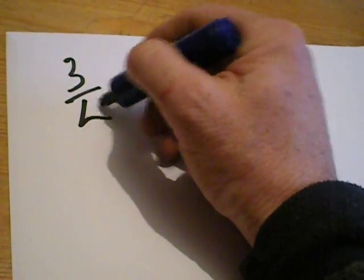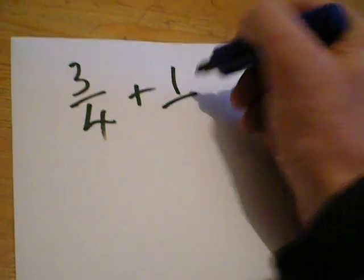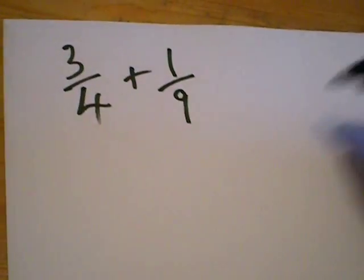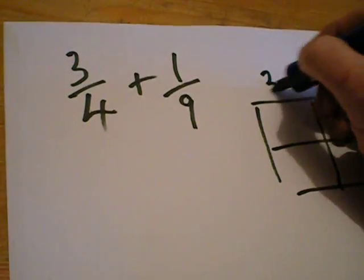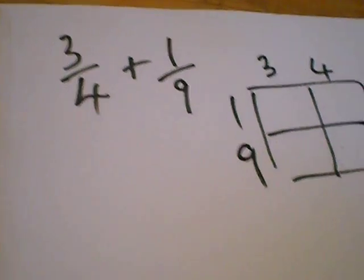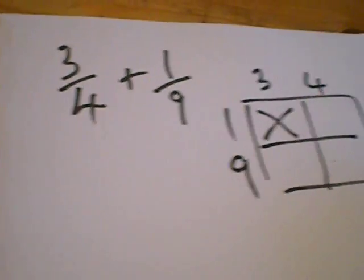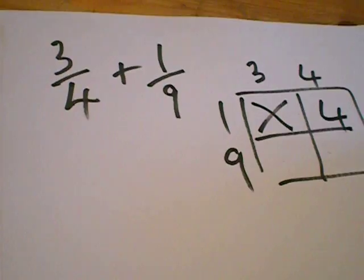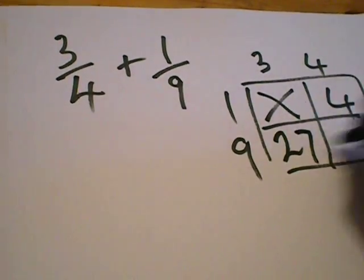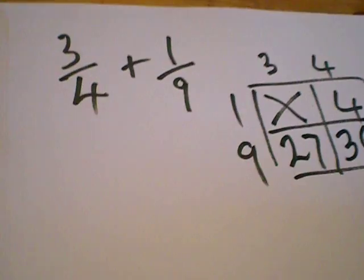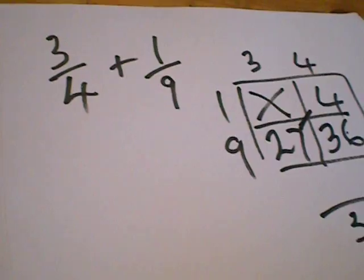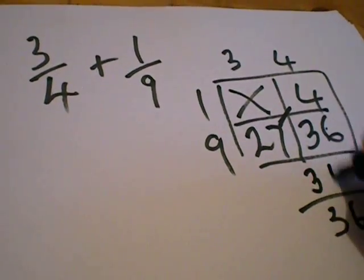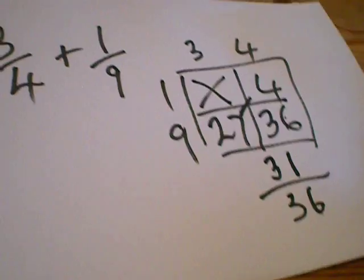Let's try one more just to make sure you actually fully understand that. So it's three over four plus one over nine. So let's draw the box. Three over four there, one over nine there. A cross there. One times four is four, three times nine is twenty-seven. Four times nine is thirty-six. So at the bottom we've got thirty-six, and then these two added up together make thirty-one. Thirty-one over thirty-six.